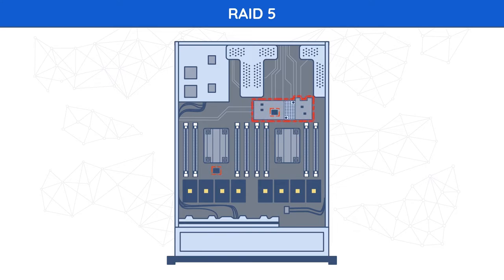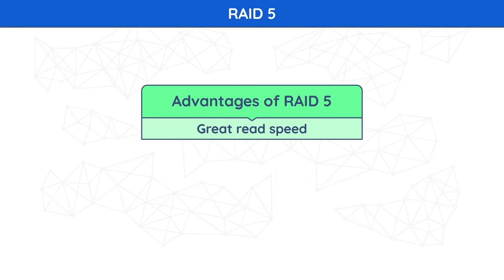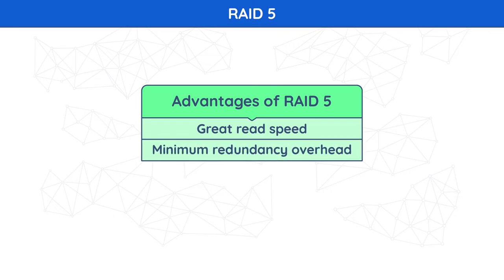Often, extra cache memory is used on these controllers to improve write performance. Advantages of RAID 5: read data transactions are very fast, while write data transactions are somewhat slower due to parity calculations, equaling the performance of a single drive in an array. If a drive fails, you still have access to all data even while the failed drive is being replaced and the storage controller rebuilds the data on the new drive.